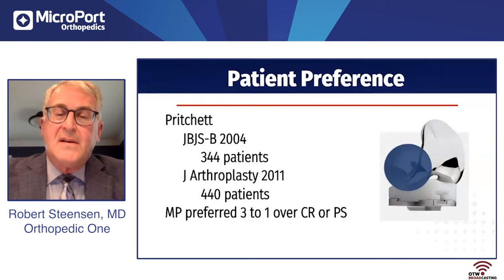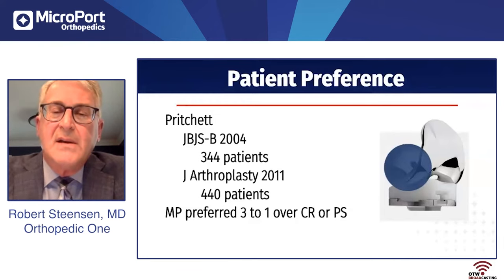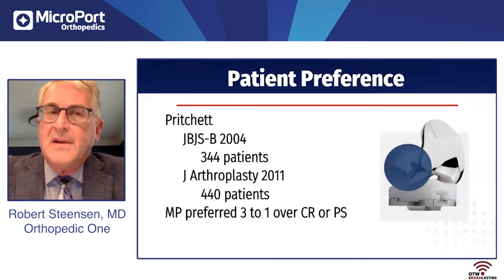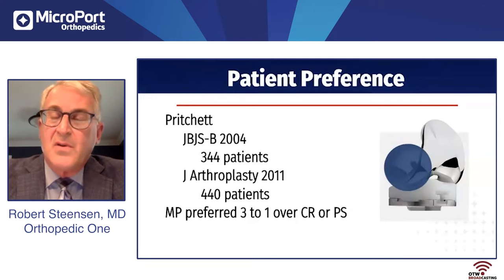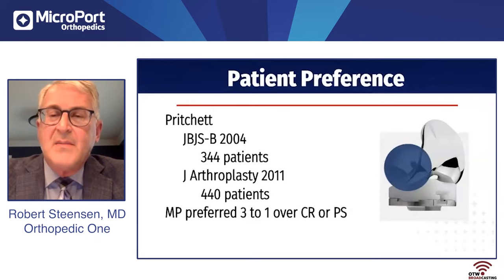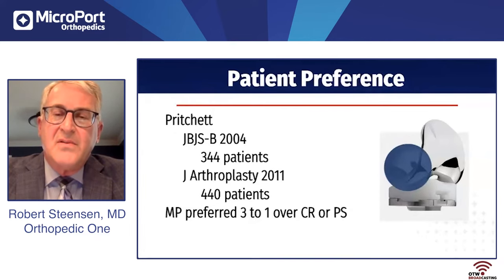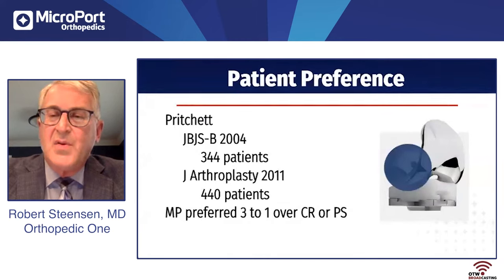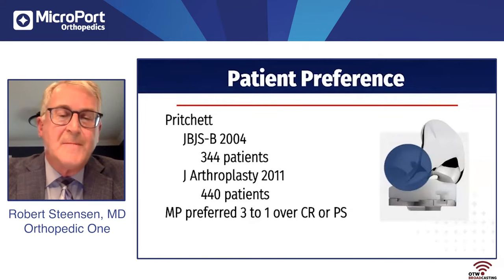He compared CR and PS knees against medial pivot and bicruciate retaining, asking patients to compare their own knees. The patients who had a medial pivot preferred it three to one over cruciate retaining or posterior stabilized. I think there's a lot of power in asking the patient which knee they like better. The stability is what patients like, because CR knees require precise posterior cruciate balancing, and the posterior stabilizer mechanism doesn't engage through the whole arc of motion like the ball and socket design does.